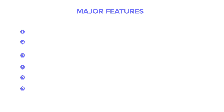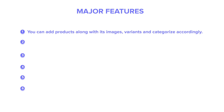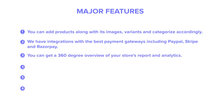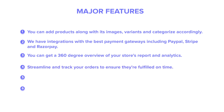In Zoho Commerce, you can add products along with its images, variants and categorize accordingly. We have integrations with the best payment gateways including PayPal, Stripe and Razer Pay. You can get a 360 degree overview of your store's reports and analytics. You can streamline and track your orders to ensure they're fulfilled on time. You can configure your shipping and taxes with custom rules.